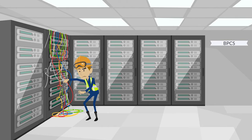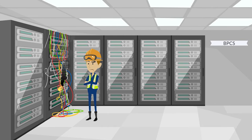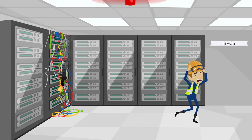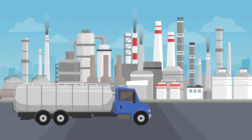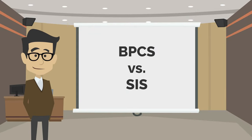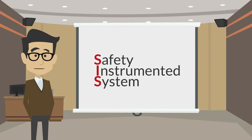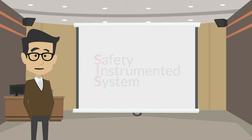But what happens if the BPCS controls malfunction? A safety instrumented system, or SIS, is an independent computing system from the BPCS, which monitors the system for potentially hazardous operating conditions.